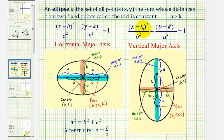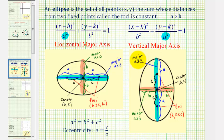Based upon this form of the equation, notice how with these two forms, a is greater than b, and therefore a squared is greater than b squared, meaning that a squared is the larger denominator. When a squared is under the x part of the equation, we have a horizontal major axis. And when a squared is under the y part of the equation, the major axis is vertical. The value of a gives us the distance from the center to the two endpoints of the major axis in both cases.